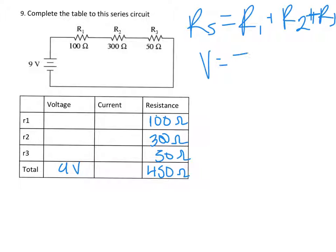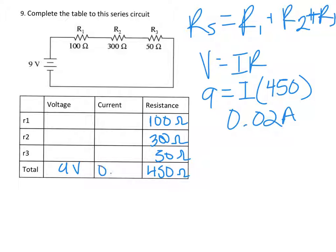And you are going to find your current for the circuit using the voltage that it gave you of 9 volts, solve for I, and then you're going to plug in that total resistance or equivalent resistance. So then you divide 9 by 450, and that is going to give you a current of 0.02 amps. All right, so you can add that to your chart.